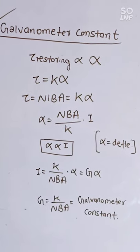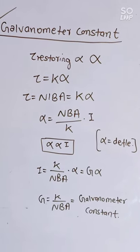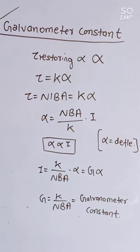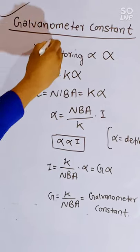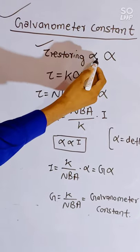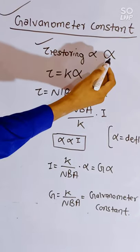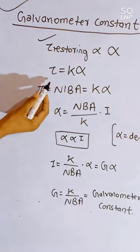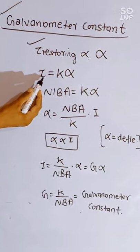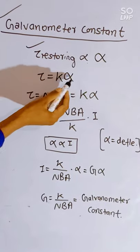Galvanometer constant. We are going to derive the term galvanometer constant. Here, restoring torque is directly proportional to alpha, where alpha is the deflection. We will write here: torque equals K alpha.